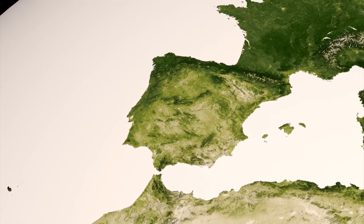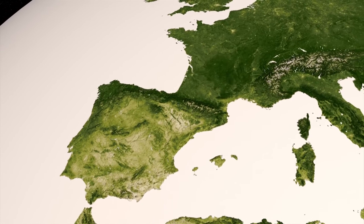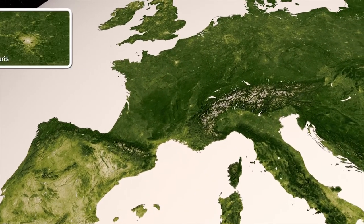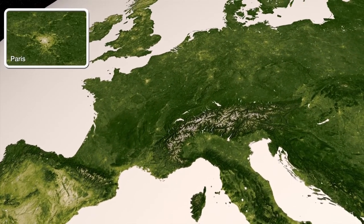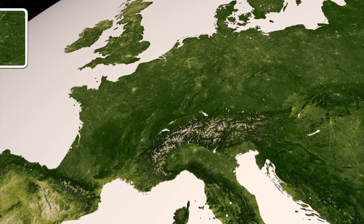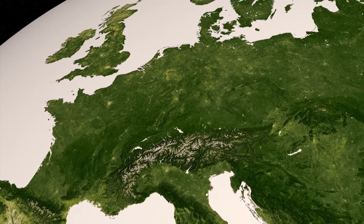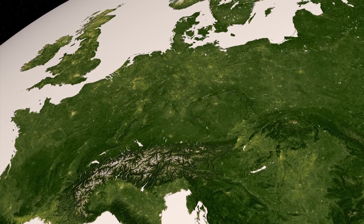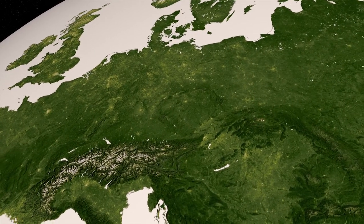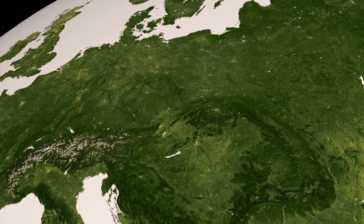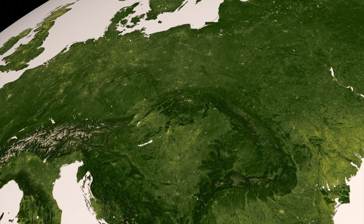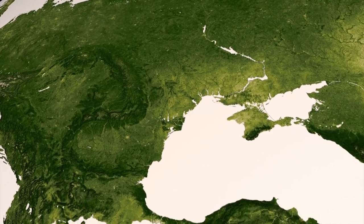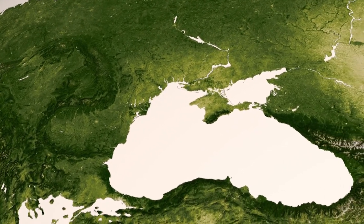How do humans impact vegetation and soil? The way people use land can affect the level of nutrition and pollution in soil. Any activity that exposes soil to the wind and rain can lead to soil loss. Farming, construction, development, and mining are among the main activities that impact soil resources.